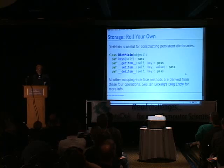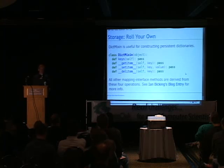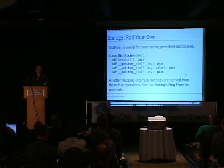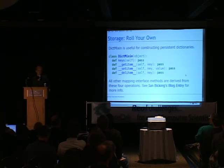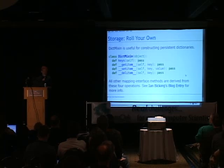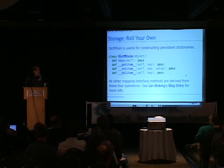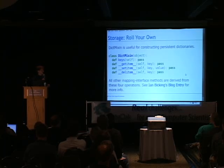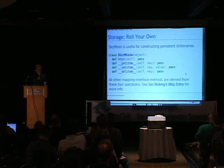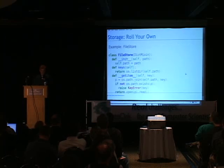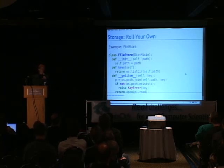There are some cool classes in the standard library called DictMixin and UserDict, and we're going to build this whole system using the mapping interface. These base classes are going to be exceptionally helpful. DictMixin is an excellent way to implement a store for data. Ian Bicking wrote a blog entry on using this to create a file store. The greatest thing about DictMixin is that you only need to implement four methods and the rest of the mapping interface is implemented based on those.